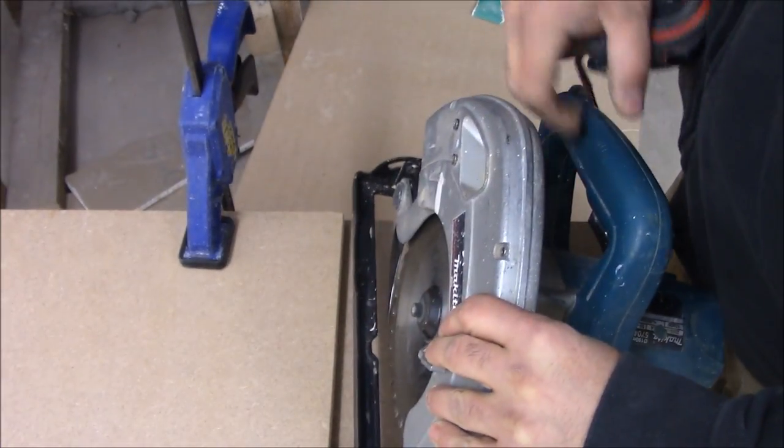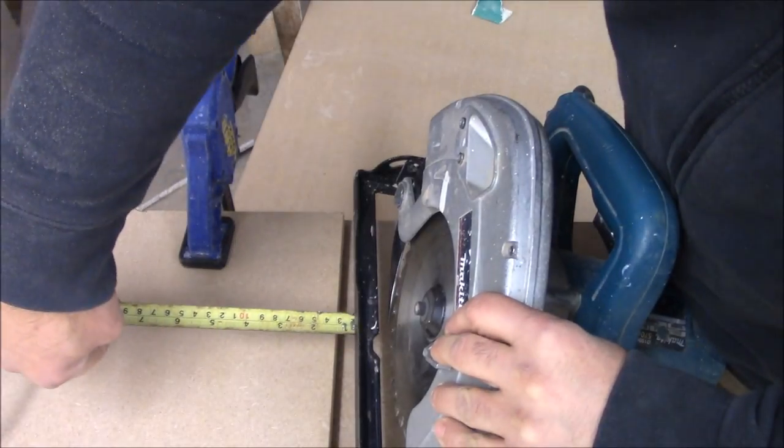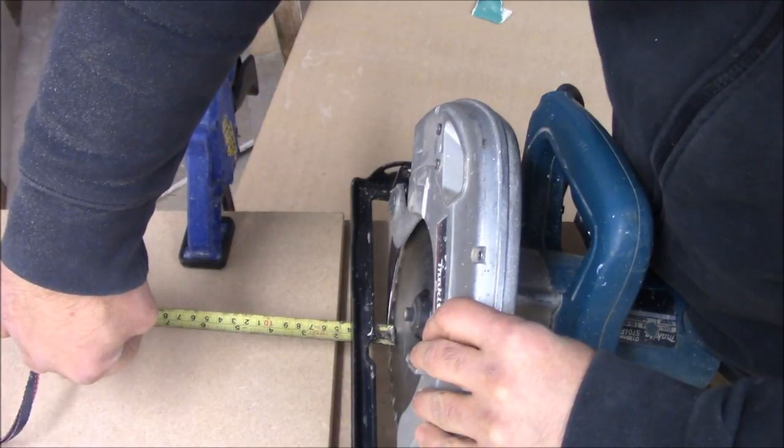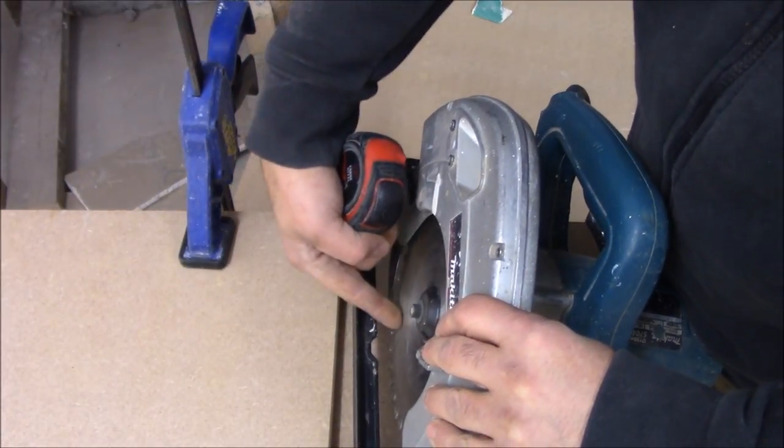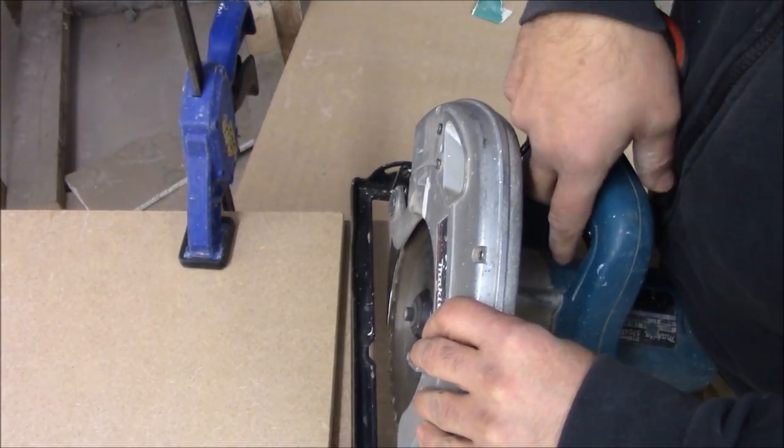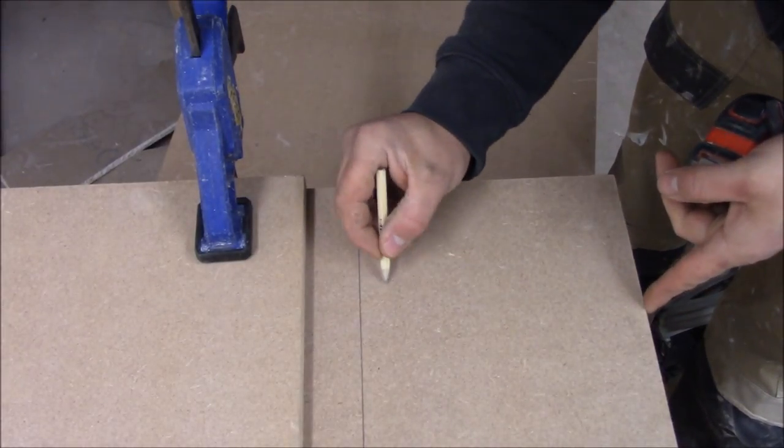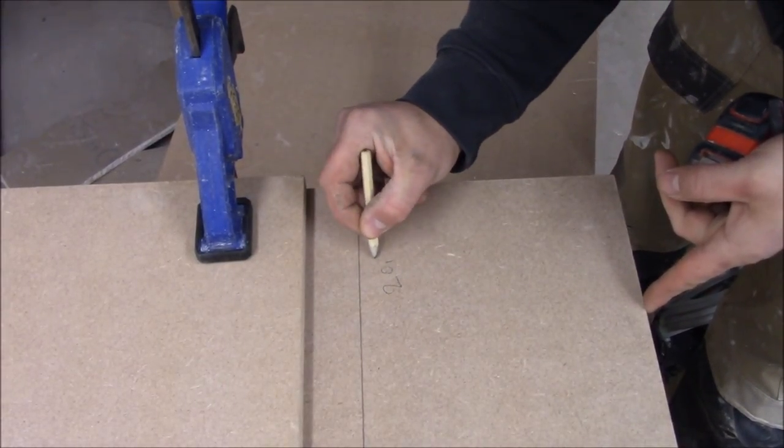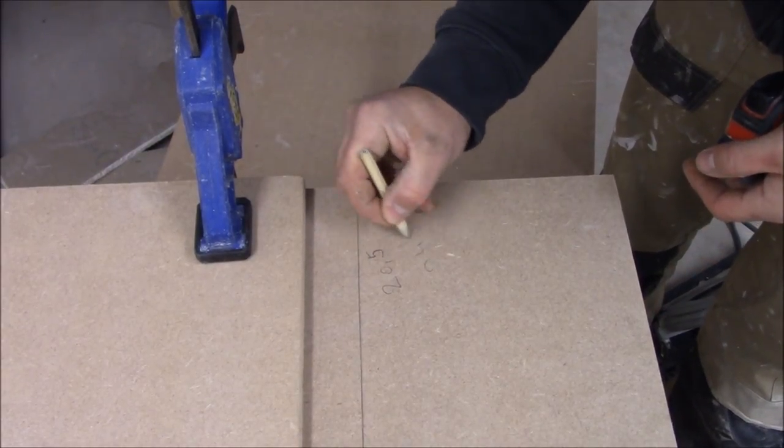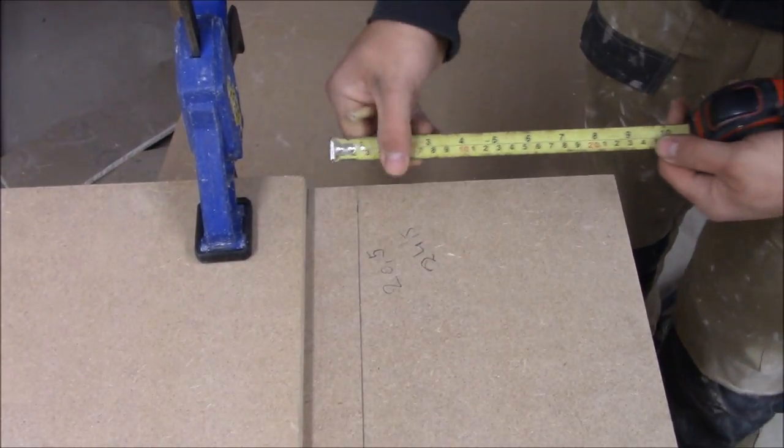So the easiest way to do it is to measure the distance between the blade and this edge. That in this case is 38mm, plus obviously the thickness of the blade, which I know is 2mm. So altogether 40mm is 4cm. So the cut we want to do is 20.5cm, plus another 4cm gives us 24.5cm. So that's what we need to measure.